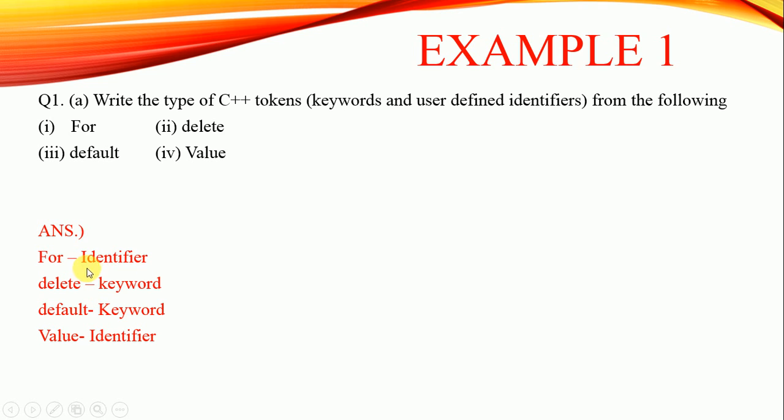'Delete' is a keyword. 'Default' is also a keyword. 'Value' is an identifier. Delete is a keyword which is used to deallocate dynamically allocated memory, and default is used as a default clause in switch blocks. So delete and default are special reserved words.